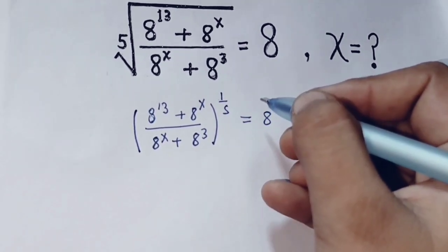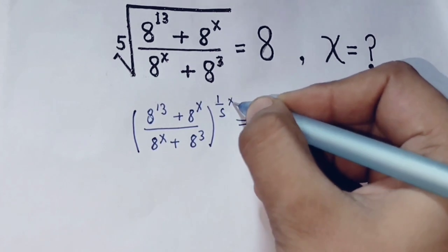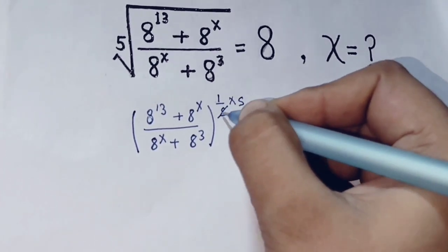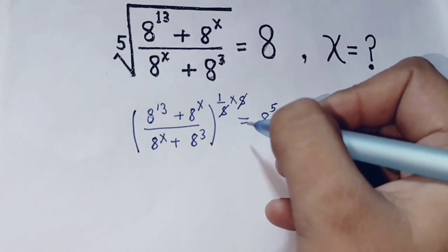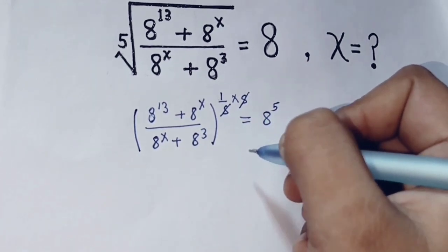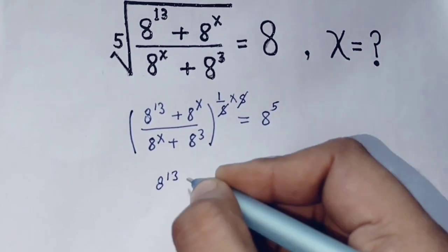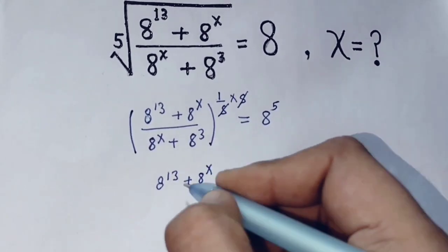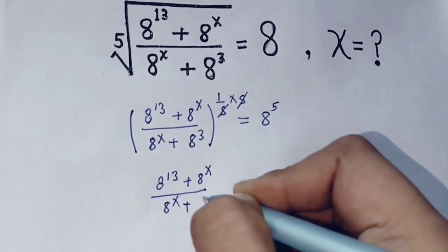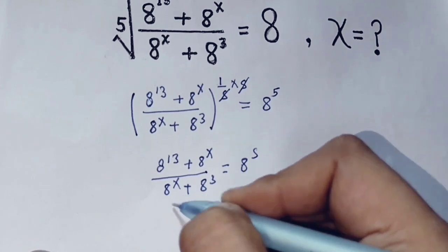Multiply both sides by 5 in the power. The 5 and the 1/5 cancel, so we get: (8 power 13 plus 8 power x) over (8 power x plus 8 power 3) equals 8 power 5.